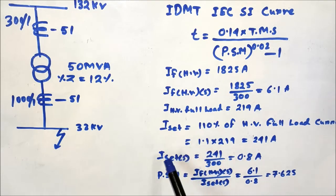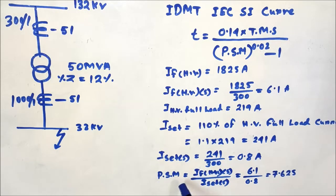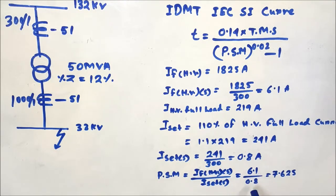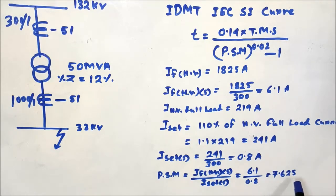The plug setting multiplier (PSM) for the HV overcurrent relay is the fault current sensed by the relay divided by the current set value. The fault current sensed is 6.1 amperes and the current set is 0.8 amperes, giving PSM = 6.1 / 0.8, which comes to 7.625.